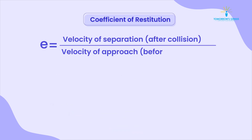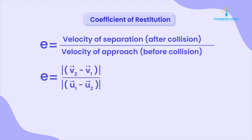What is the coefficient of restitution? The ratio of final velocity to the initial velocity between two objects after their collision is known as the coefficient of restitution. It is denoted as E and is a unitless quantity. E = velocity of separation (after collision) / velocity of approach (before collision) = (V2 - V1) / (U1 - U2).